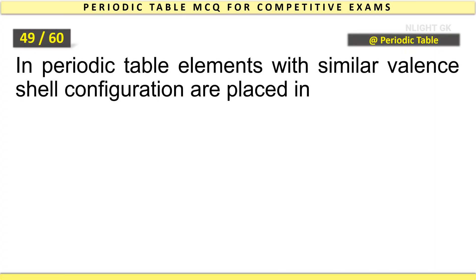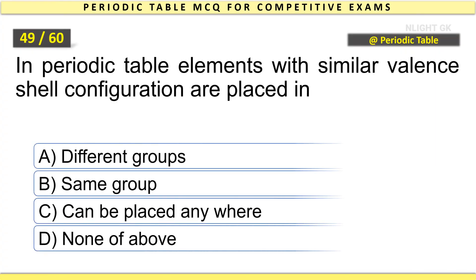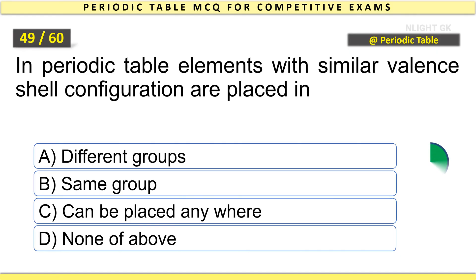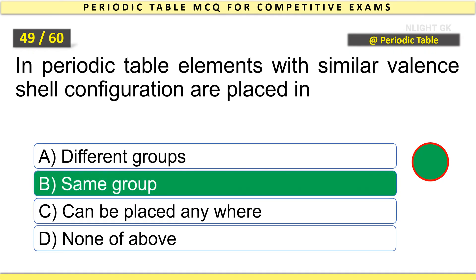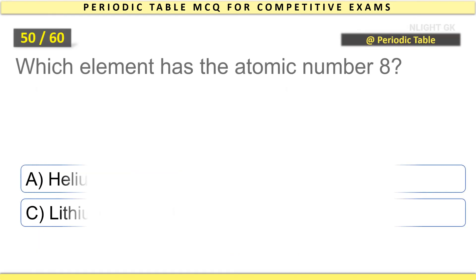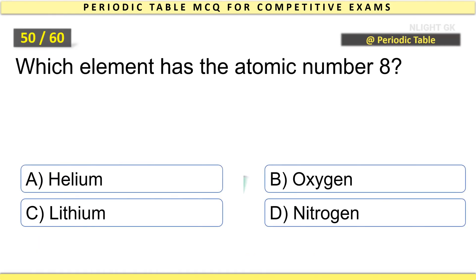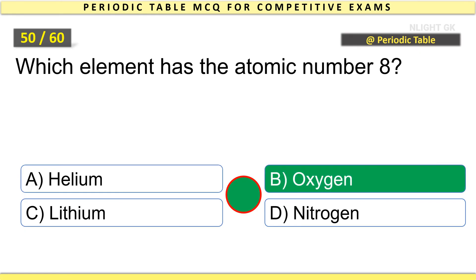In the periodic table, elements with similar valence shell configuration are placed in the same group. Which element has the atomic number 8? Oxygen.